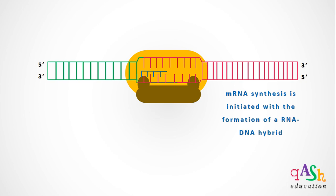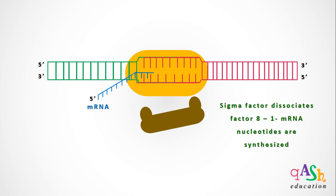The process of mRNA synthesis begins with the addition of dNTPs from the first nucleotide of the RNA coding gene on the 3' to 5' DNA template. The mRNA nucleotides are complementary to the DNA template, resulting in the formation of an RNA and DNA hybrid. After the synthesis of 8 to 10 mRNA nucleotides, the sigma factor dissociates from the RNA polymerase, as it is no longer needed once the promoter sequence has been identified and initiation of transcription has been accomplished.